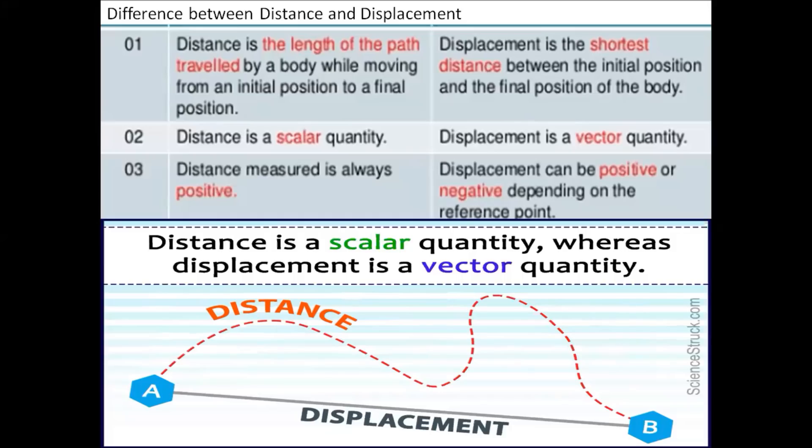Now we can differentiate between distance and displacement as shown in the table. Distance is the length of the path traveled by a body while moving from an initial position to a final position, whereas displacement is the shortest distance between the initial position and the final position of the body.